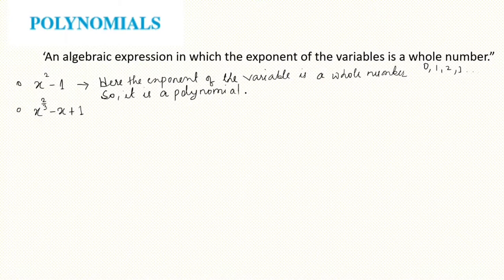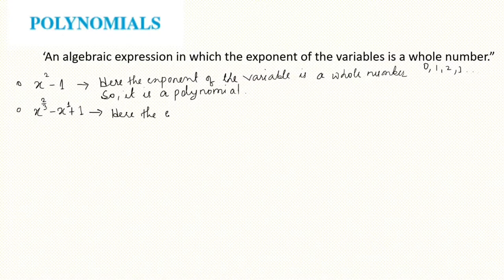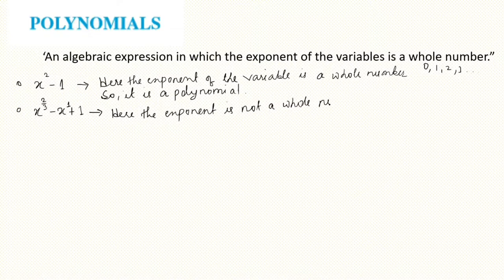Similarly, in the next expression, the variable x has an exponent of 2/3. Since 2/3 is not a whole number, this is not a polynomial. The exponent must be a whole number, so this expression is not a polynomial.